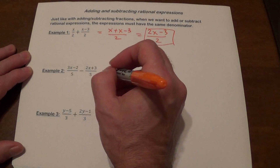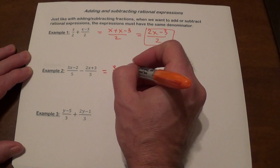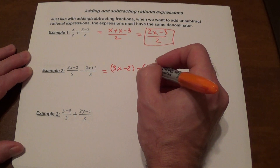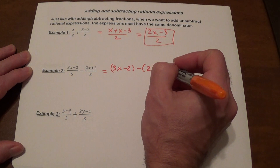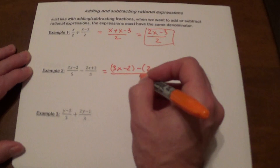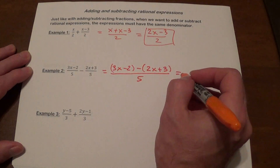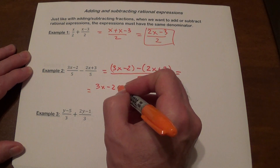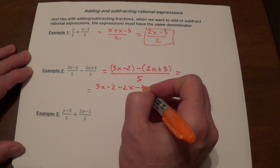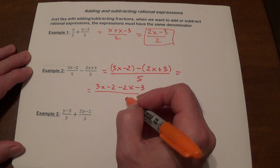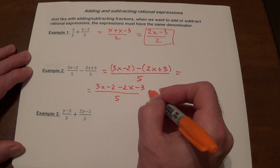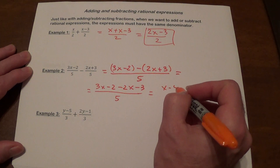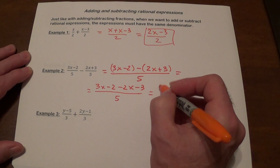Moving to the next problem — same idea, but we just need to be careful with problems involving minus, just like when you have problems with subtracting polynomials. When you have a minus, you need to put it in parentheses and then properly distribute the negative 1. That's going to give us x minus 5, divided by 5.